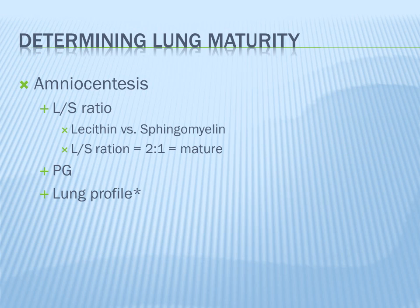Now we'll talk about fetal lung maturity. All three fluids — amniotic fluid, fetal lung fluid, and surfactant — get mixed together in the amniotic fluid because the baby mimics respirations in utero, sucking amniotic fluid in and pushing lung fluid and surfactant out. We can withdraw a sample of amniotic fluid with a needle via amniocentesis and test it to see if the baby's lungs are mature.